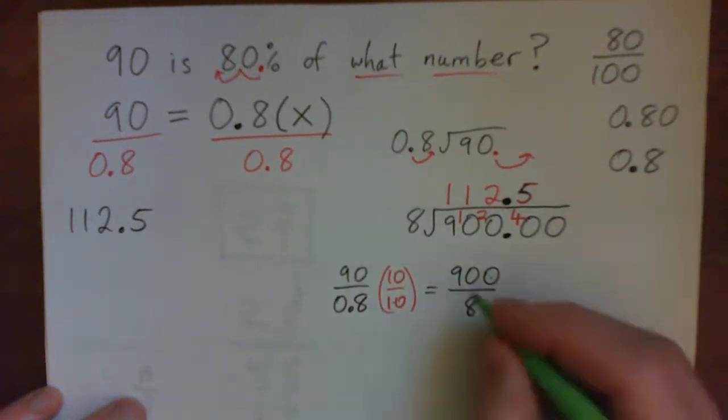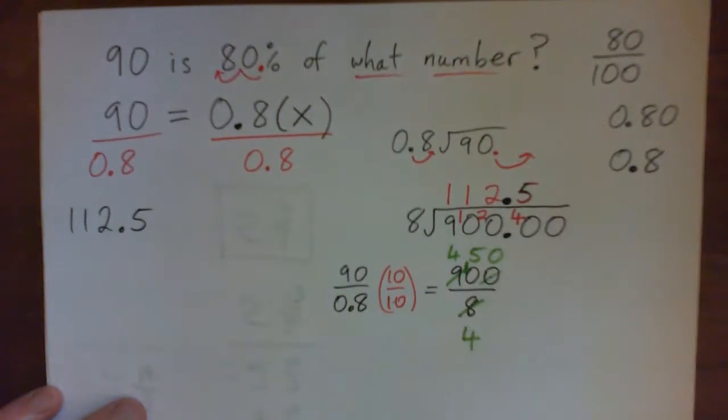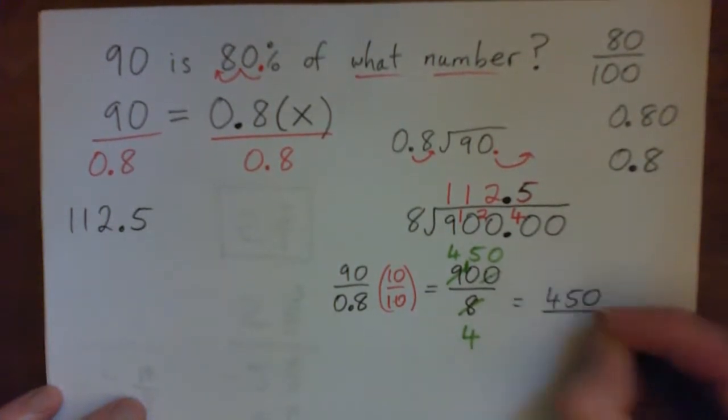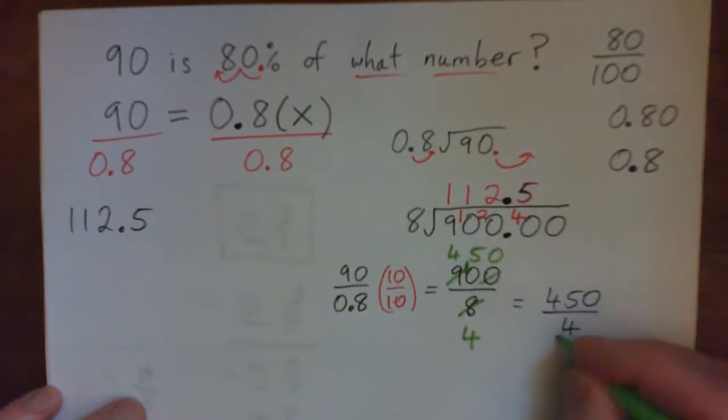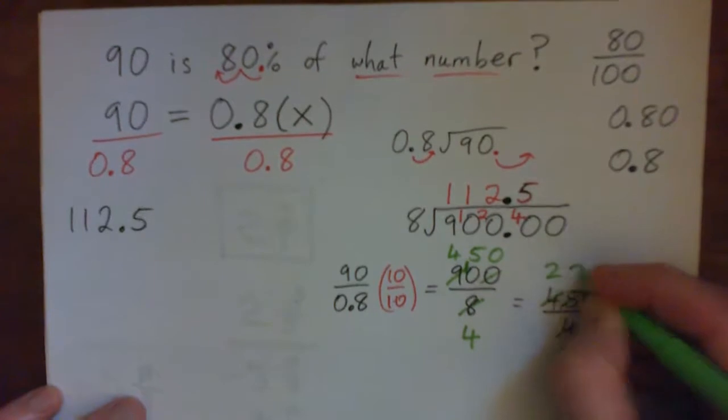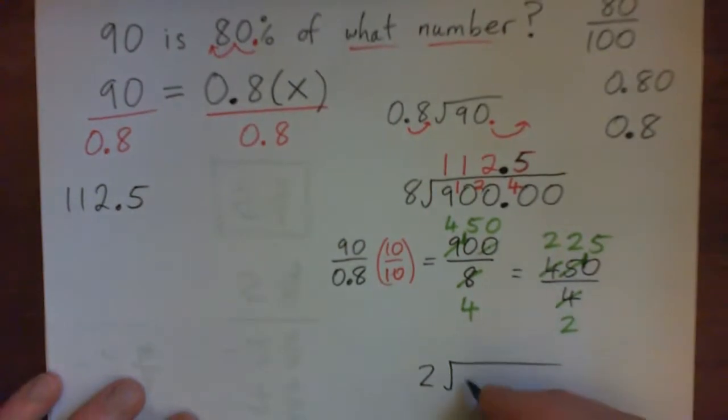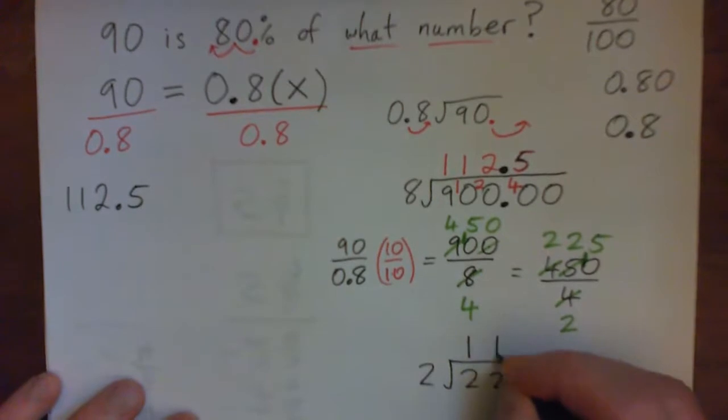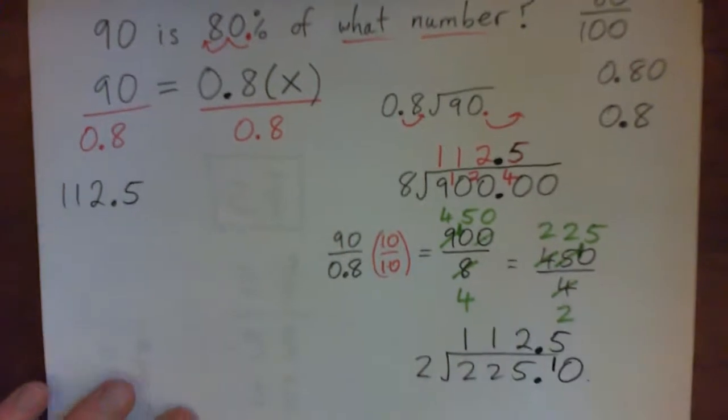At this point, I could actually divide top and bottom by 2. 2 into 8 goes 4 times. 2 into 9, 4 times remainder of 1. 2 into 10, 5 times. 2 into 0, 0 times. This gives me 450 over 4. 450 is an even number. So, 2 will go into top and bottom. 2 into 4 goes twice. 2 into 4 goes twice. 2 into 5 goes twice, remainder 1. 2 into 10 goes 5 times. So, I have 225 over 2. And now, this is not an even number. So, 2 into 225. 2 into 2 goes once. 2 into 2 goes once. 2 into 5 goes twice, remainder 1. And put my remainder 1 over here. Add another 0. 2 into 10 goes 5 times. 112.5. So, that would be another way of doing it.